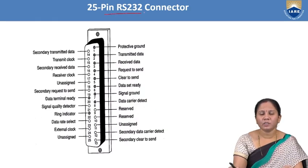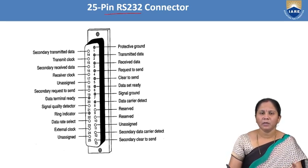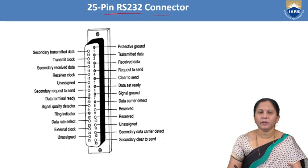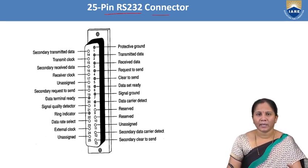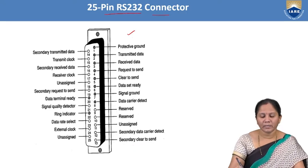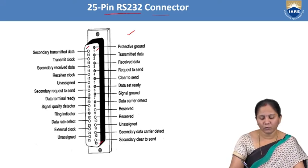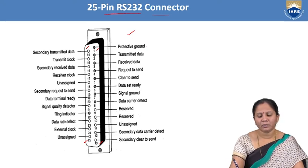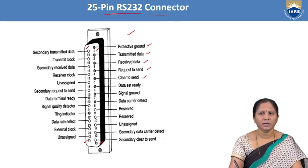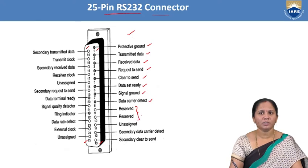RS-232 is a communication cable that consists of signal pins. It is available in a 25-pin package and a 9-pin package. The 25-pin RS-232 cable has pins 1–13 on one row and pins 14–25 on the other. The signals include protective ground, transmitted data, received data, request to send, clear to send, data set ready, signal ground, data carrier detect, secondary data carrier detect, reserved pins, and unassigned pins.